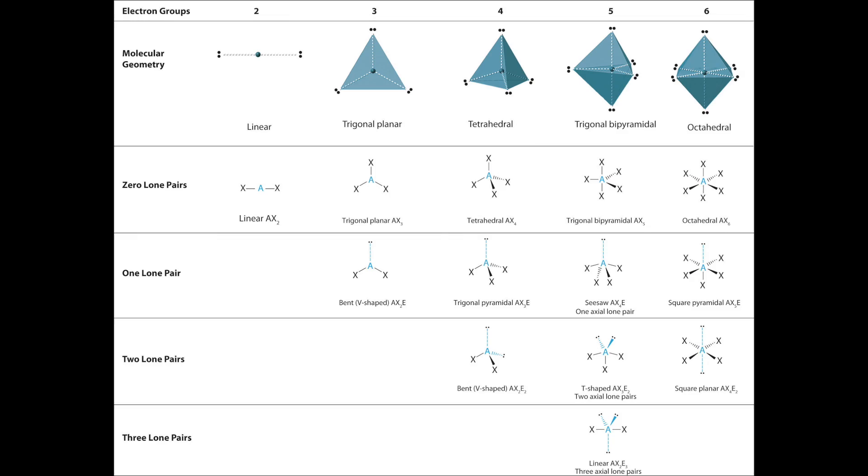A molecule with four electron groups can be tetrahedral, trigonal pyramidal, or bent, depending on the number of lone pairs.